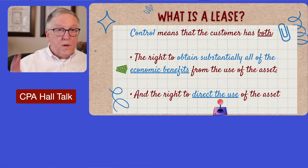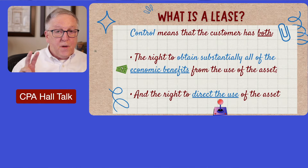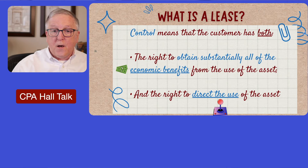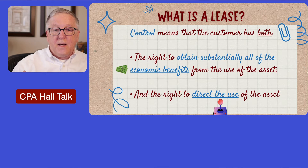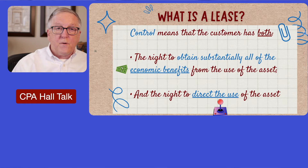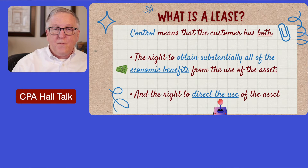What does the word 'control' mean? Two things have to be in place in order to have control. One, the lessee has to have the right to obtain substantially all of the economic benefits from the use of the asset. And secondly, the lessee has to have the right to direct the use of the asset. If they can't control how the asset is used, or if they don't reap the economic benefits of the agreement, then that agreement does not fall under 842.